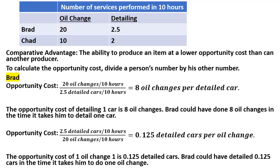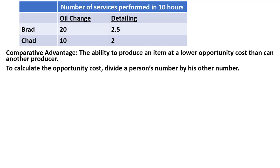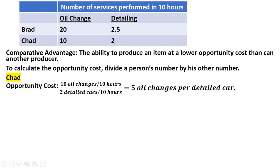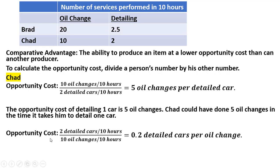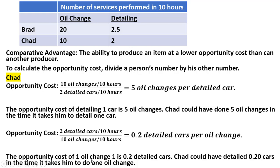We're going to do the same thing for Chad to calculate his opportunity costs. Taking 10 divided by 2, that simplifies to 5 oil changes per detailed car — meaning the opportunity cost of detailing one car for Chad is 5 oil changes; Chad could have done 5 oil changes in the time it takes him to detail one car. Then taking 2 divided by 10, we get 0.2 detailed cars per oil change. The opportunity cost of one oil change for Chad is 0.2 detailed cars — Chad could have detailed 0.2 cars in the time it takes him to do one oil change.